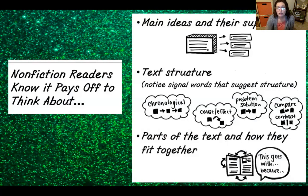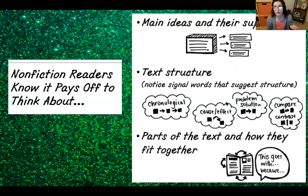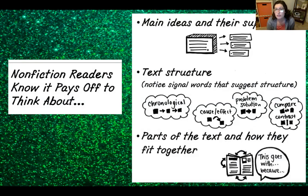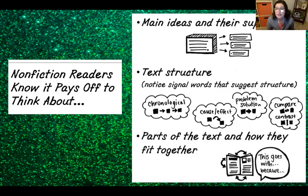Text structure. Sometimes text is written in chronological order — that means in order of the events that happen. It could be a cause and effect relationship, where one event causes another event to happen. There's also problem and solution, where there is an issue and it is somehow solved in the end. And compare and contrast, where two different topics are viewed to find similarities and differences.